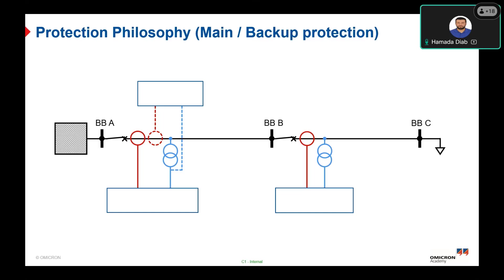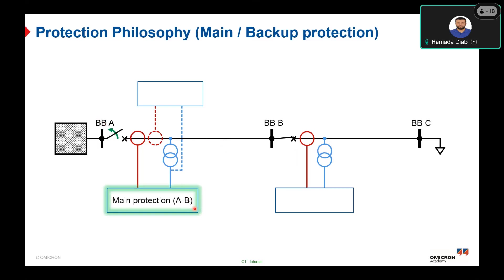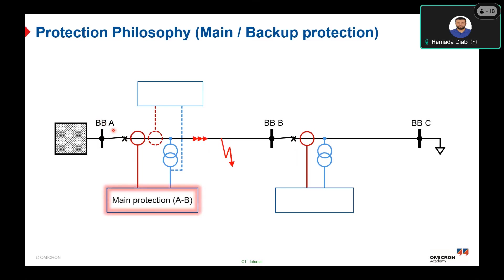You can choose from different protection philosophies based on your power system. For example, consider a network with busbars A, B, C, circuit breakers, and a connected load. The busbar from A to B has a CT and VT connected to the main protection, and CT only connected to the overcurrent backup protection. If a fault occurs on the line between substation A and substation B, the main protection with its short trip time should isolate the fault by tripping circuit breaker A. If the main protection fails for any reason — such as a relay power supply issue — the backup protection must operate.